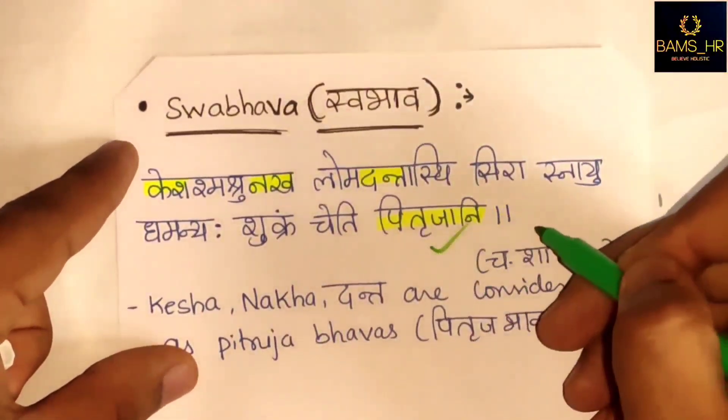In Ashtanga Sangraha, Uttar Tantra, second chapter, Dantodpatti is discussed. In a healthy baby, teeth come out in the eighth month and may erupt by the fourth month after that. If teeth come earlier, the child suffers from pain (Vedana) and illness. In a Deergayu or healthy baby, teeth ideally come out in the eighth month.